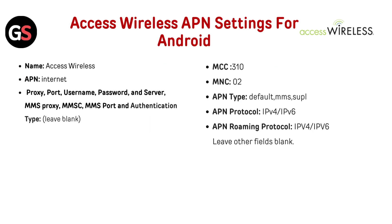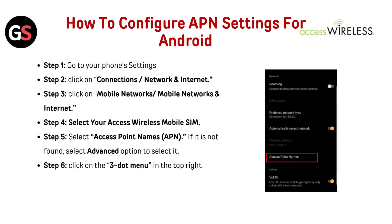Access Wireless APN settings for Android: Name — Access Wireless; APN — Internet; Proxy, Port, Username, Password, and Server leave blank; MMS Proxy, MMSC, MMS Port, and Authentication Type leave blank; MCC 310; MNC 02; APN Type — Default, MMS; APN Protocol — IPv4 or IPv6; APN Roaming Protocol — IPv4 or IPv6. Leave other fields blank.